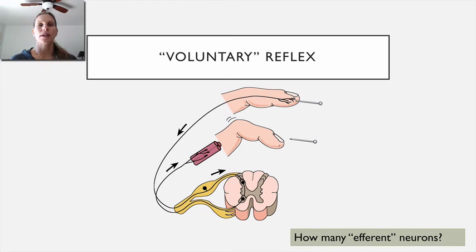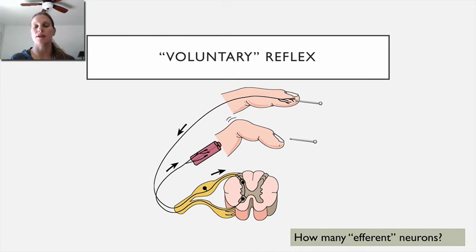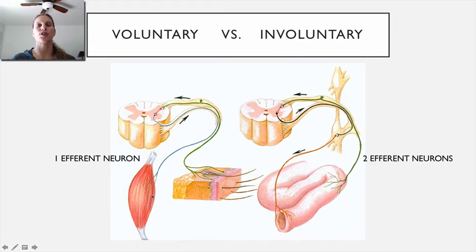When looking at the outgoing nervous system organization, consider how many efferent neurons there are. If there's only one neuron carrying a motor signal leaving the CNS — traveling from that level of the spinal cord all the way to, in this case, the muscle of the finger — that is a voluntary or somatic signal. The voluntary system has one efferent neuron: one big long neuron that leaves the spinal cord and synapses at the neuromuscular junction at the skeletal muscle.